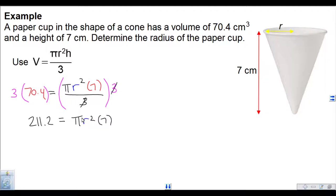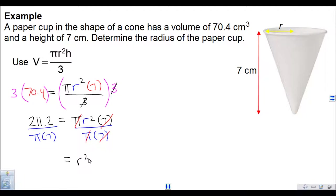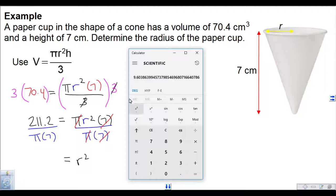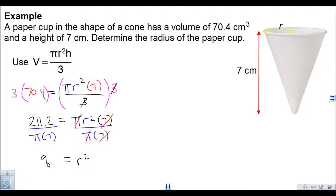Now we've got to remove the pi and the 7 from this side of the equation. Pi and 7 are both multiplying with r, so we divide pi and 7 from both sides, so the pi's and the 7's divide away, leaving r squared. We figure out 211.2 divided by, and in brackets, pi times 7 — that equals 9.6.